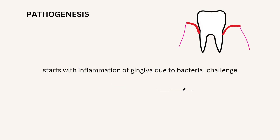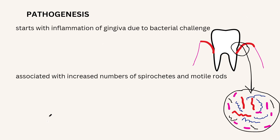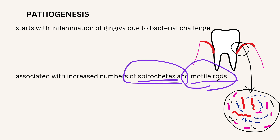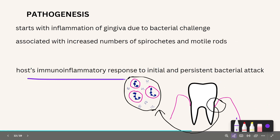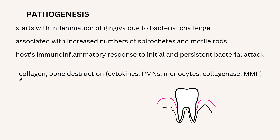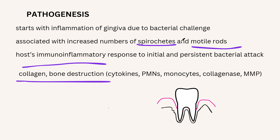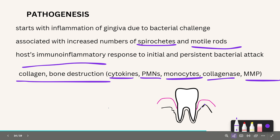The pathogenesis of a periodontal pocket begins with inflammation of the gingiva due to bacterial challenge, as the oral cavity is never sterile. Predominantly spirochetes and motile rods dominate, triggering a host immunoinflammatory response to the persistent bacterial attack. This results in the production of cytokines, neutrophils, monocytes, collagenase, and matrix metalloproteinases, eventually leading to collagen destruction, alveolar bone destruction, and PDL destruction.